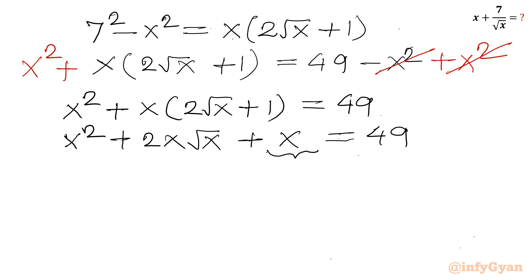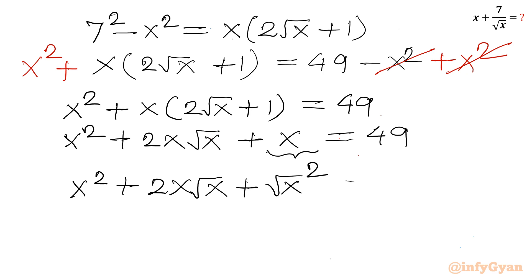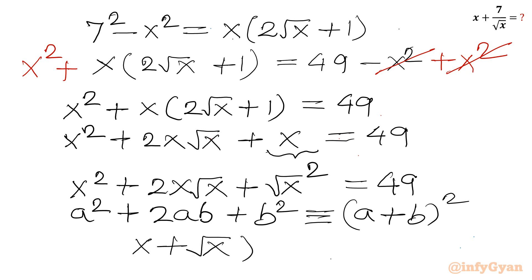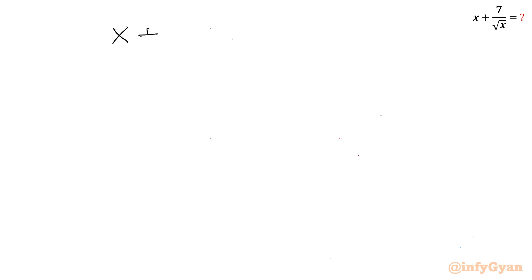I can rewrite x as (√x)². So the left-hand side becomes (√x)² + 2·x·√x + (√x)² — recognizing this as x² + 2x√x + (√x)². If we let a = x and b = √x, this is a² + 2ab + b², which equals (a + b)², that is (x + √x)². So (x + √x)² = 49 = 7².